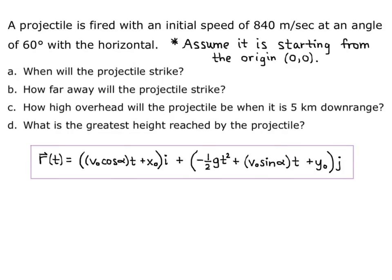We can use our formula developed in the last video. R of t, the position, equals the quantity v-naught cosine alpha times t plus x-naught as the i component, plus the quantity negative one-half g t-squared plus v-naught sine alpha times t plus y-naught as the j component. Remember, g is gravity, v-naught is initial speed, and alpha is the angle with the horizontal.